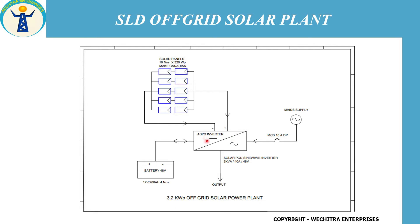The voltage and current are defined in the off-grid type solar power plant specification, and according to that these panels are connected in series and parallel. As we know, in series connection the current remains the same and voltage gets added, while in parallel the voltage remains the same and current gets added. These specifications differ for different types of solar power plants, and according to that the panels are connected.